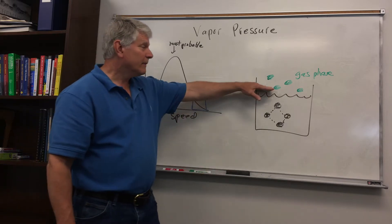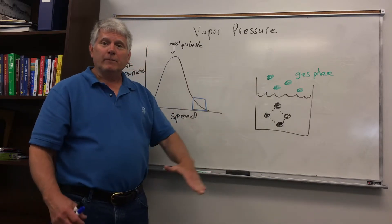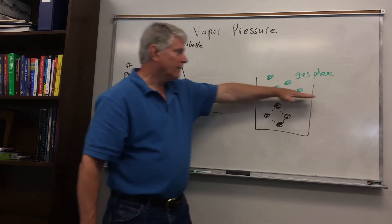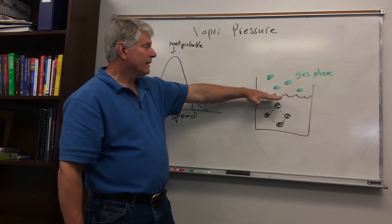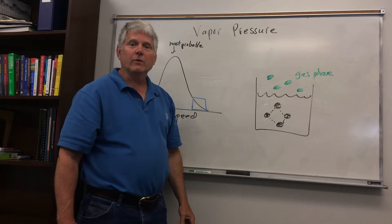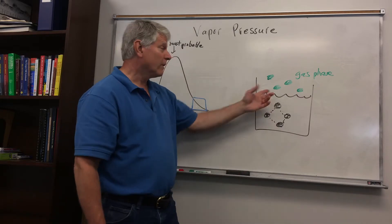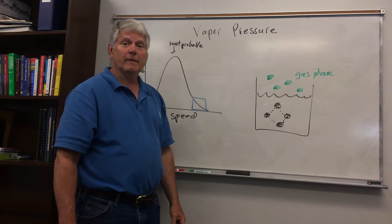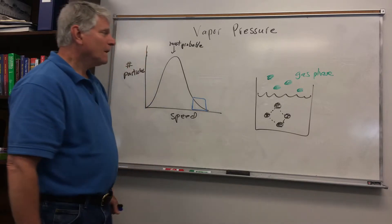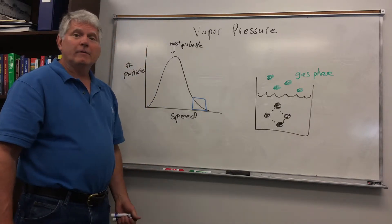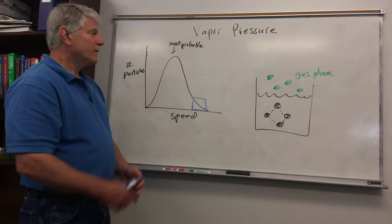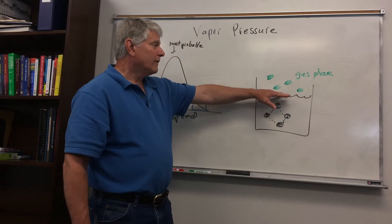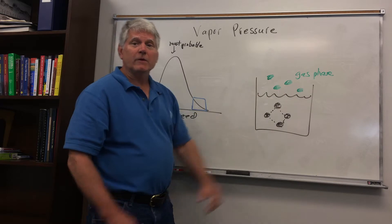To get to the vapor phase, liquid particles have to push the air away because air is sitting on top of the liquid. So it has to push the air away in order to make room for the gas particles. This is called the vapor pressure — the pressure exerted by the vapor coming out of a liquid phase.